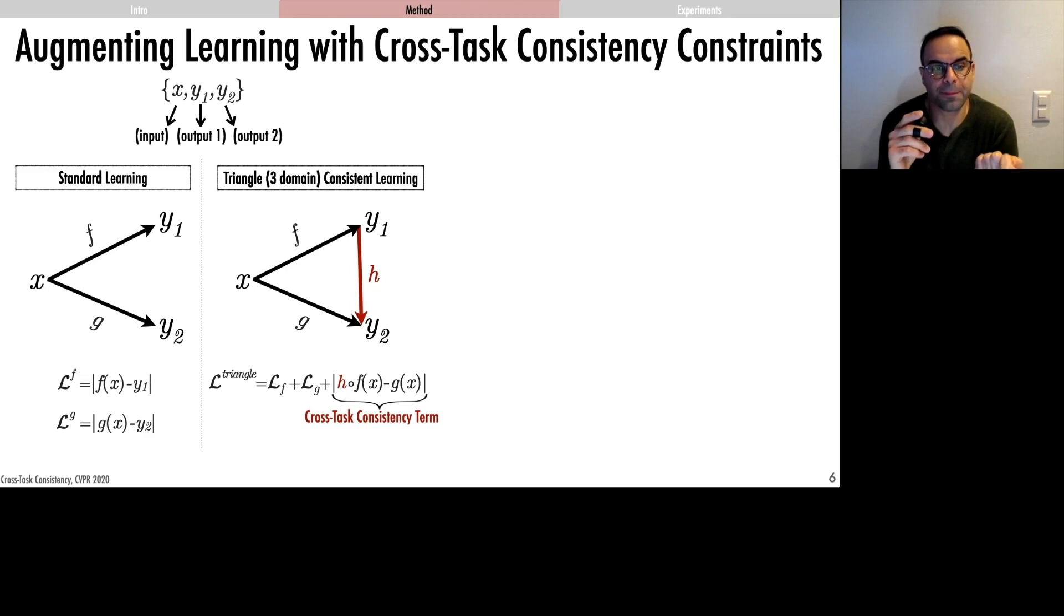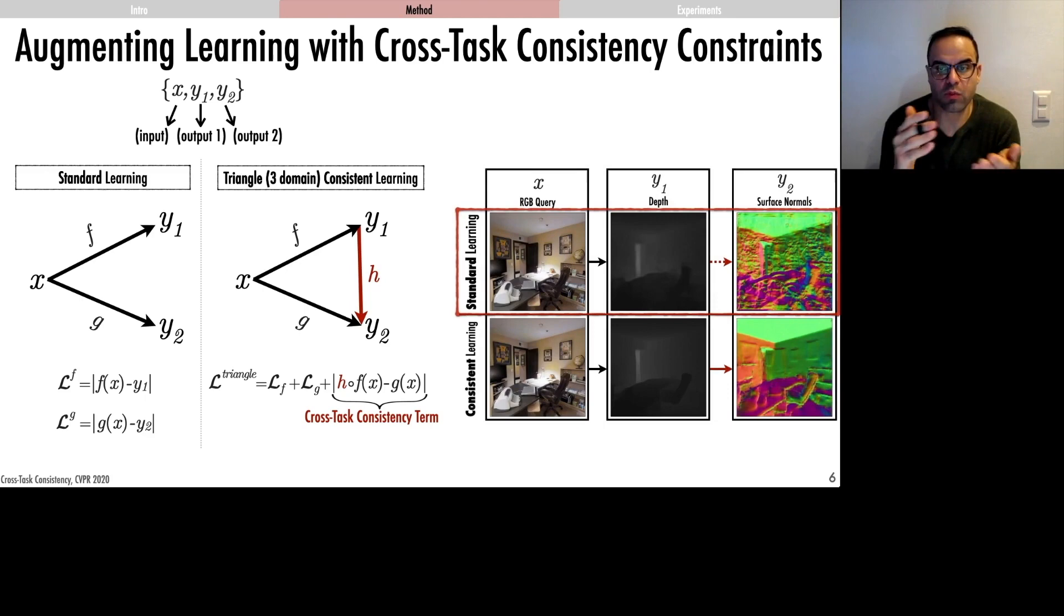Here's an intuitive, qualitative example. X is RGB image and Y1 and Y2 are depth and surface normals. If you learn to predict depth independent of normals, then infer normals out of it, the results show a lot of inaccuracies.